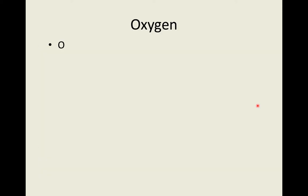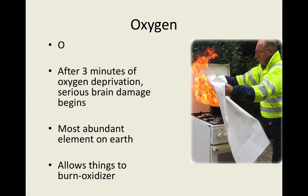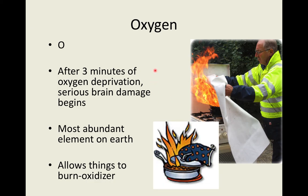So oxygen is O. After three minutes, your brain depends on it. And what also depends on it is fire. So a good way to put out a fire is to smother it and it doesn't get any oxygen. And you're good to go. That's the best way to extinguish a cooking fire.